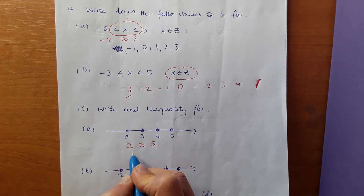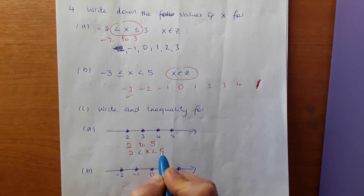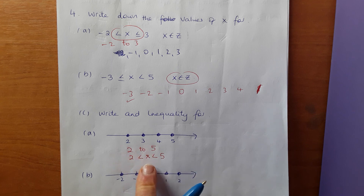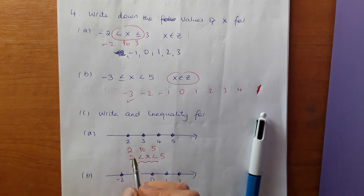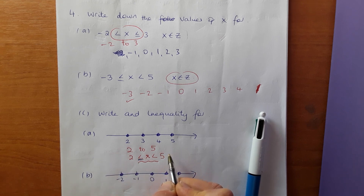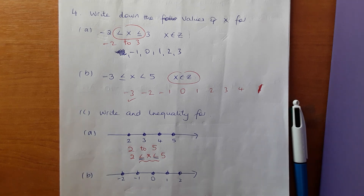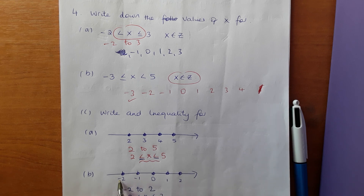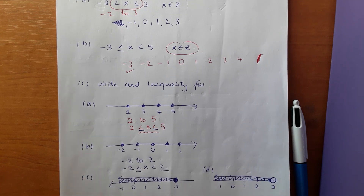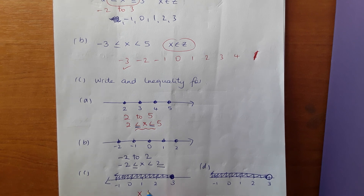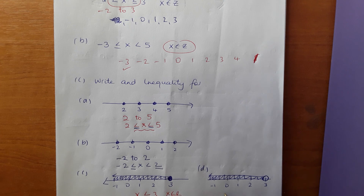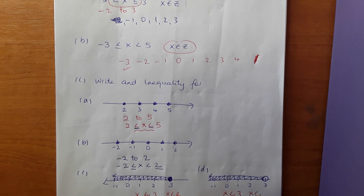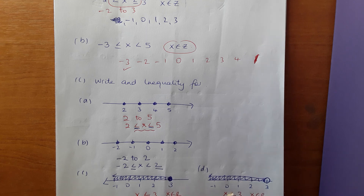Write an inequality for a number line showing all numbers between two and five: two less than x less than five. Go from smallest to biggest. Check the dots — dot at two means include it, so add equals; dot at five means include it, so add equals. For a line from minus two to two with dots at both ends: minus two less than or equal to x less than or equal to two. For real numbers with a shaded circle at three: x less than or equal to three. If the circle is open, it's x less than three — no equals.